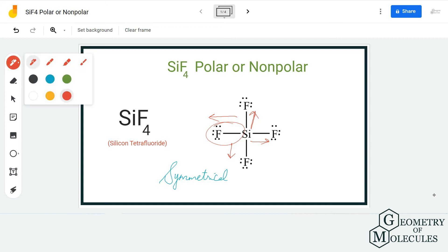as it is a symmetrical molecule, these dipole moments cancel each other out. As these dipole moments are cancelled, the net dipole moment of this molecule becomes zero. Since there is no net dipole moment, no poles are formed in this molecule, and hence SiF4 is a non-polar molecule.